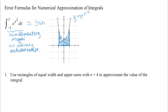The first problem asks us to use rectangles of equal width and upper sums with n equals four to approximate the value of the integral. So we need to think about the width: delta x is how wide each rectangle is going to be. Taking the width of the whole interval from negative one to one — that's two units — divided by n equals four, we get delta x equals two-fourths or 0.5.